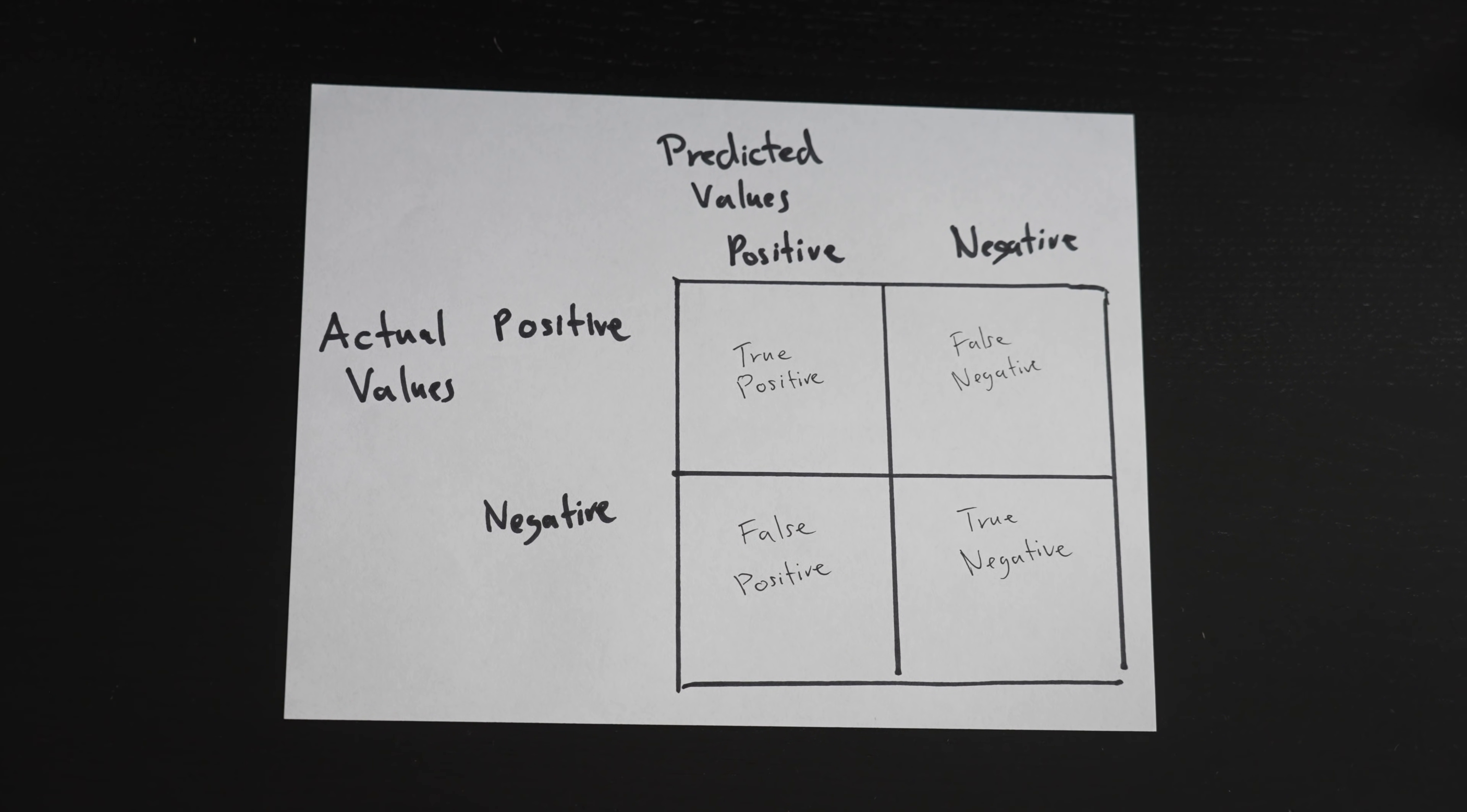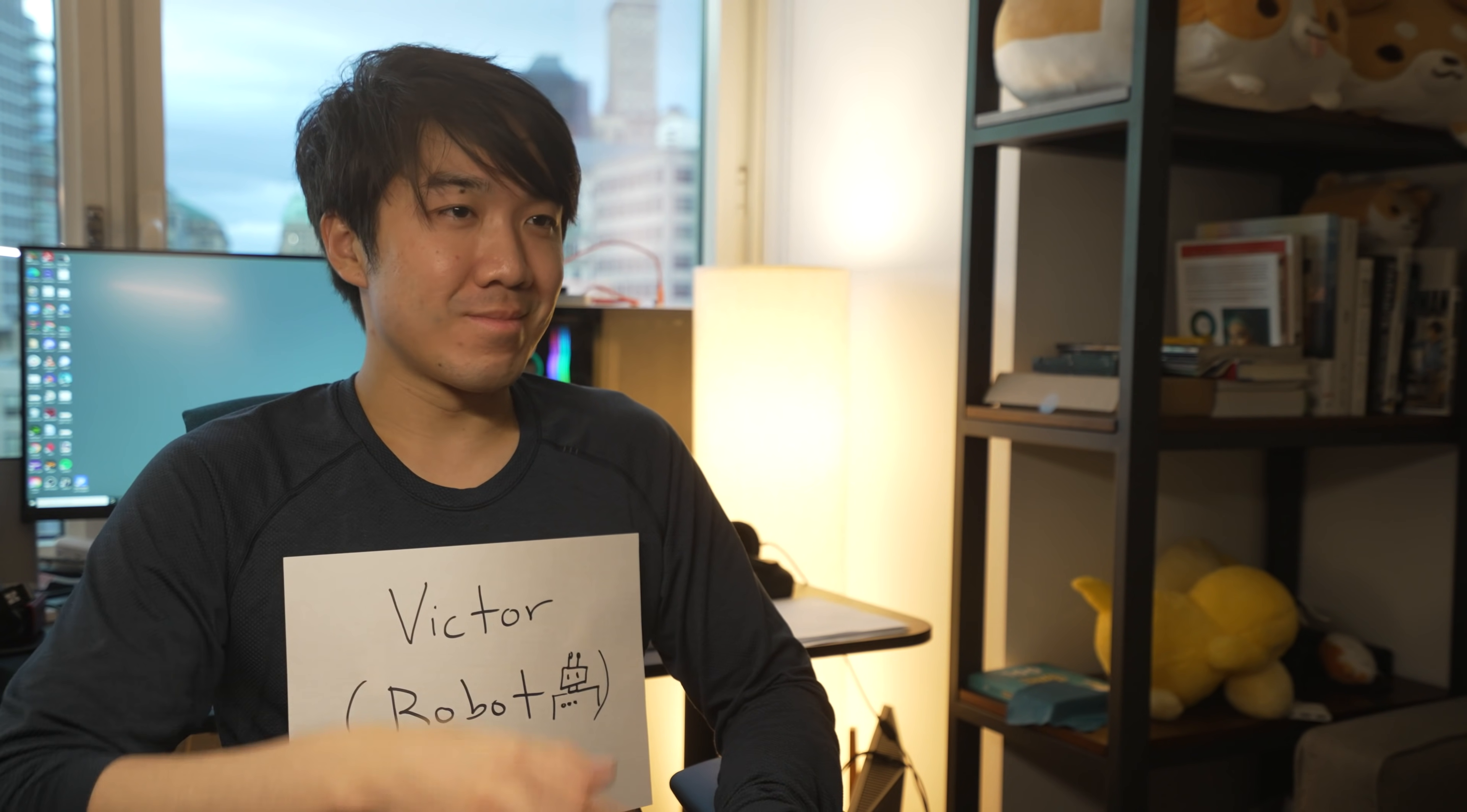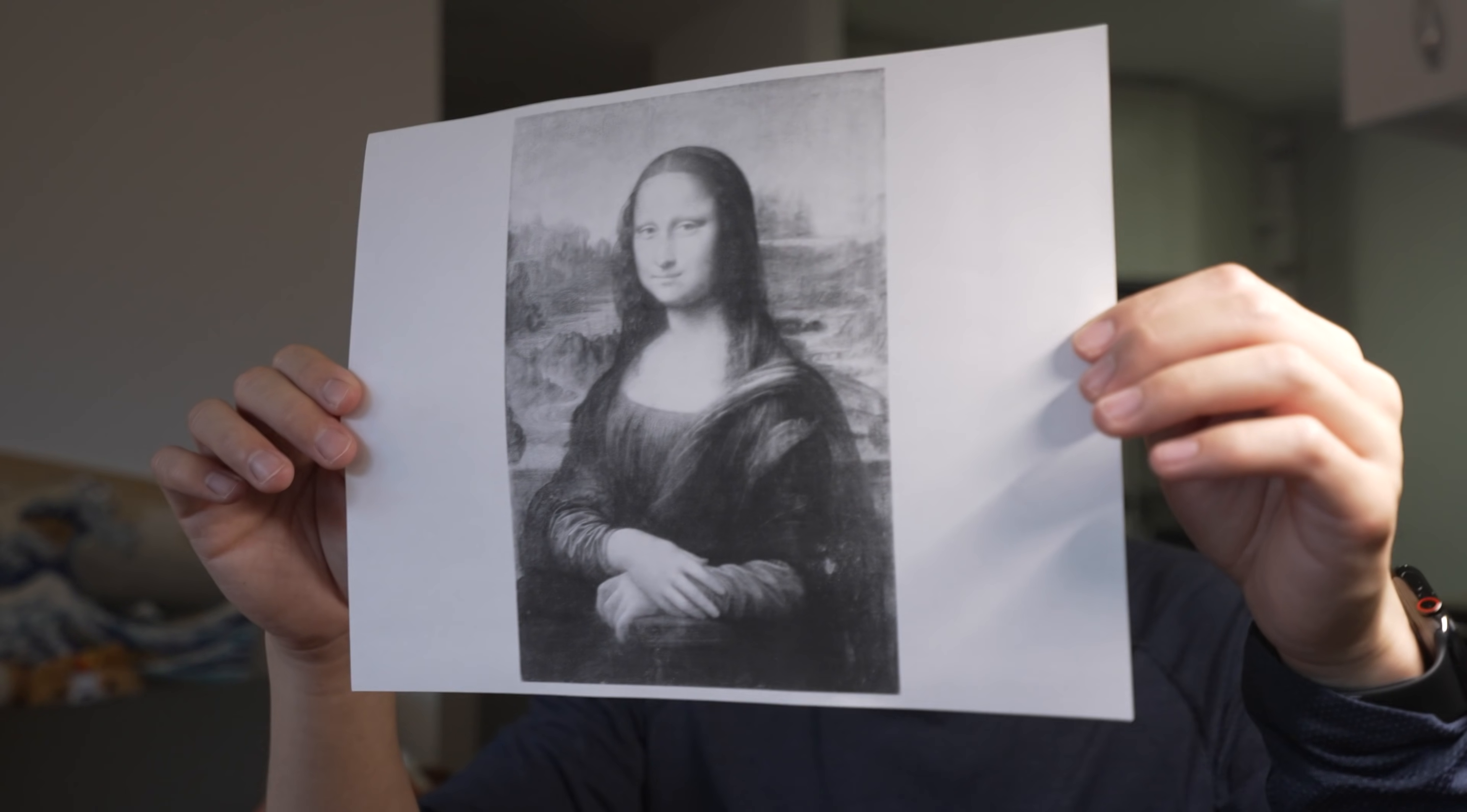This is the situation where you thought something was true, but it was actually false. To explain this, here's Victor, the hot dog predictor. He's a robot. His job is to look at an image and say whether or not it's a hot dog. Here's the first image.